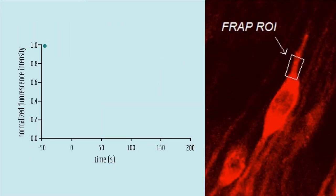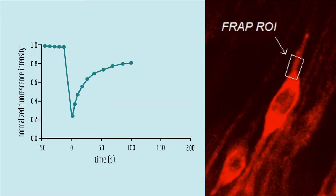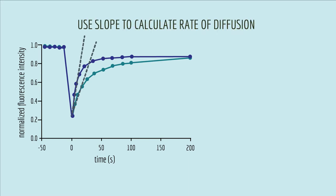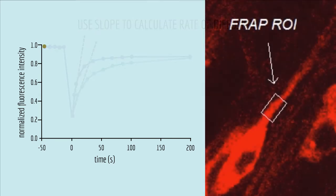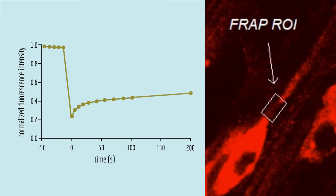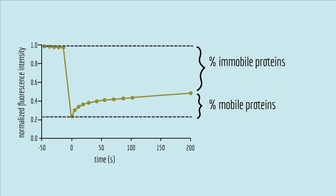Scientists can quantify how much and how fast the fluorescence recovers after photobleaching. Proteins that move faster have steeper fluorescence recovery curves. The steepness of this slope is how scientists calculate the rate of diffusion for the protein of interest. And if proteins are immobile, fluorescence levels won't recover all the way to prebleached levels. How much the fluorescence recovers tells scientists what percentage of the proteins are mobile or immobile. So you can see that scientists can learn a lot about how proteins move around inside the cell just from the fluorescence recovery curve.